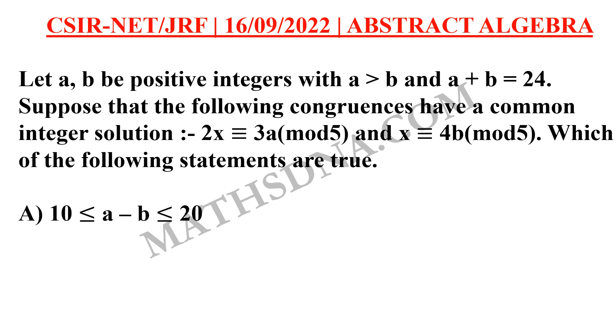And the options are: (A) 10 is less than or equal to a minus b is less than or equal to 20. (B) 3b is greater than a is greater than 2b. (C) a is greater than 3b. And (D) a minus b is divisible by 5.